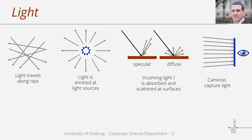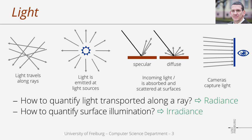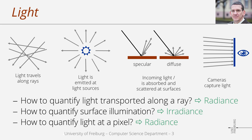The goal of this presentation is to introduce radiometric quantities that can be used to represent light. In particular, we look into physical quantities such as flux, irradiance, and radiance. As we will see, these three quantities can be used to specify light in different settings. For instance, radiance is used to quantify the amount of light transported along a ray. If such light hits a surface, it illuminates the surface, and this illumination can be specified with irradiance. And the light absorbed by a sensor can also be specified as radiance.